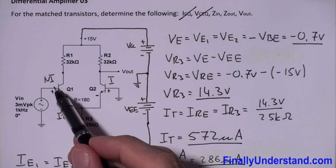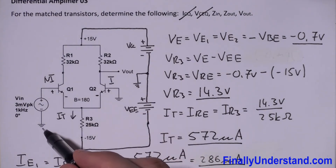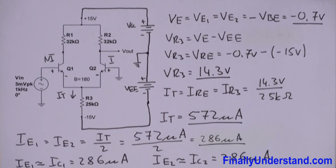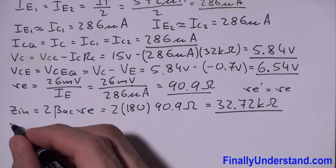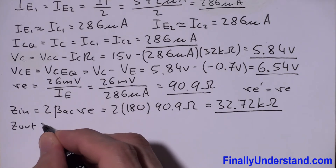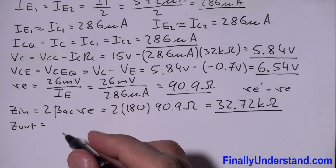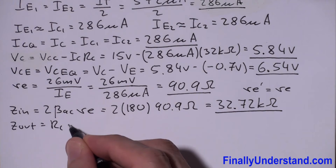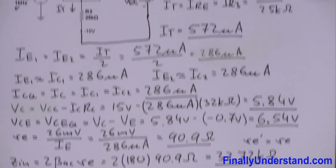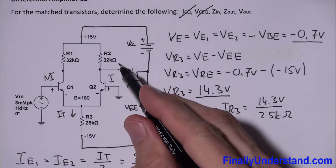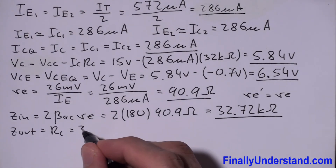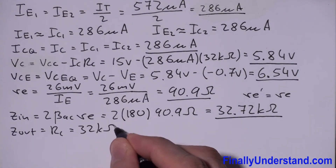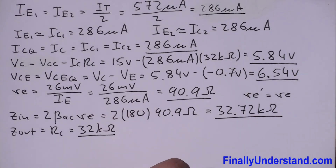Next we find the output impedance. Zout for this configuration is simply equal to RC, which in our case is 32 kilohms. So Zout equals 32 kilohms.